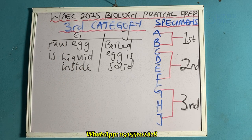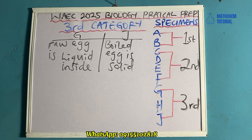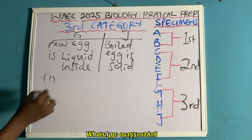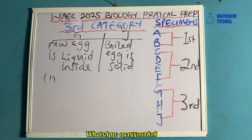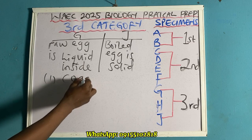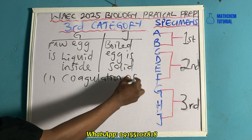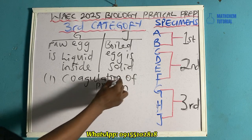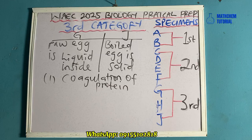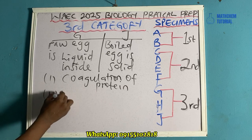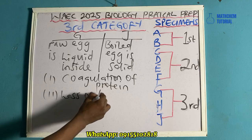Another question they can ask is to mention two changes that occur when an egg is boiled. Number one is coagulation of protein. Number two is loss of transparency.